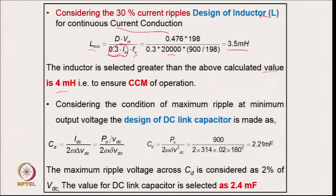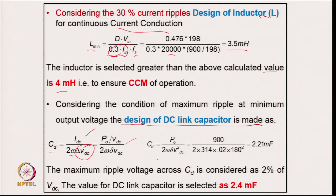Considering the condition of maximum ripple at the output voltage, the DC link capacitor is designed using C_d = I_dc / (2 × ω × ΔV_dc). This does not depend on switching frequency but depends on load current, ripple in output voltage, and the second harmonic of supply frequency. Substituting all values gives 2.21 mF.